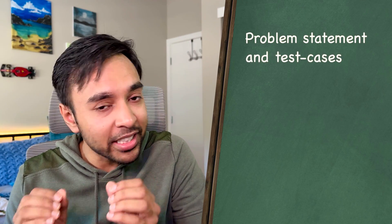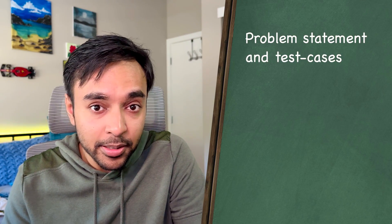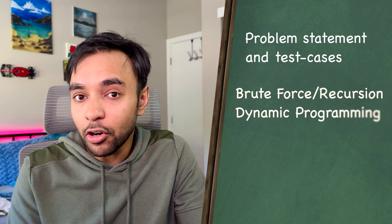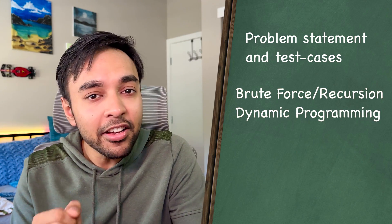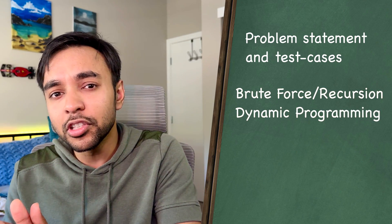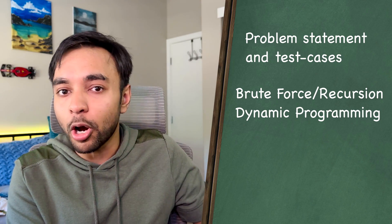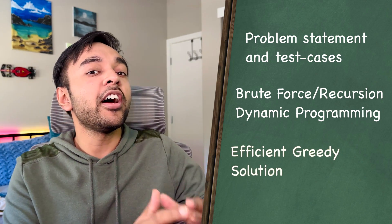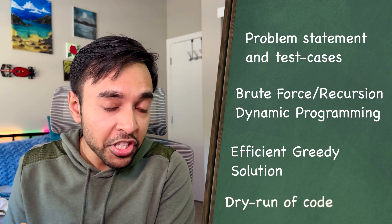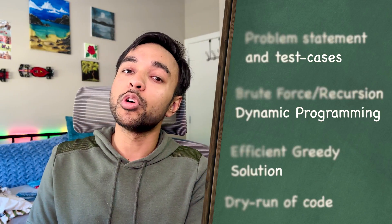Hello friends, welcome back to my channel. First, I will explain the problem statement and we'll look at some sample test cases. Going forward, we will start with the most naive way and see why a recursive solution or a dynamic programming solution is not most optimal. After that, we will find an efficient solution using the greedy approach and then do a dry run so you can visualize how all of this is actually working in action. Without further ado, let's get started.